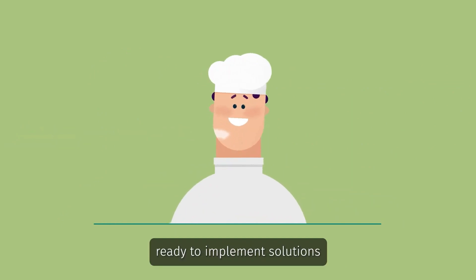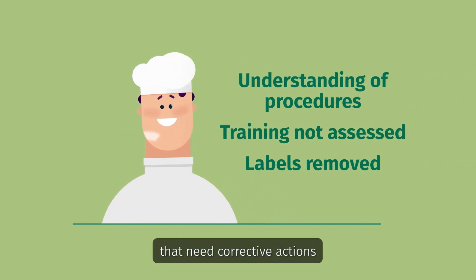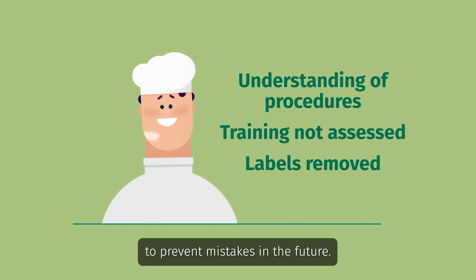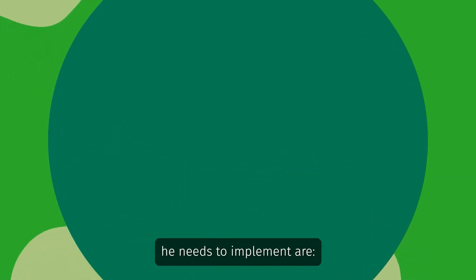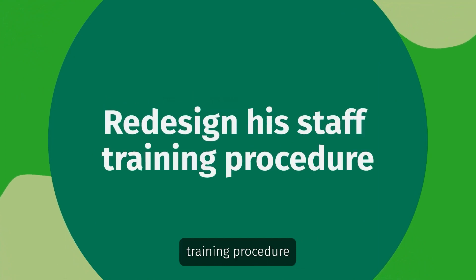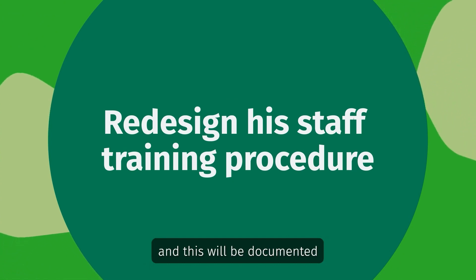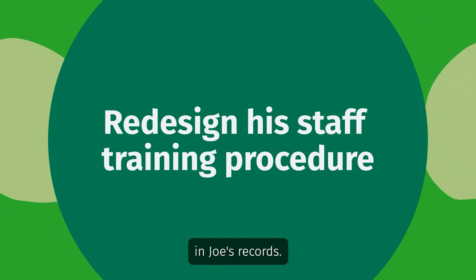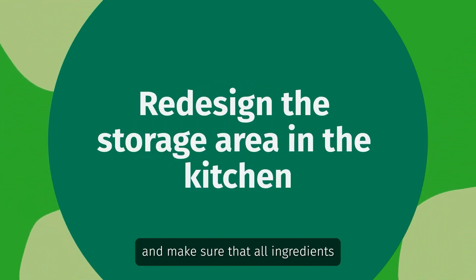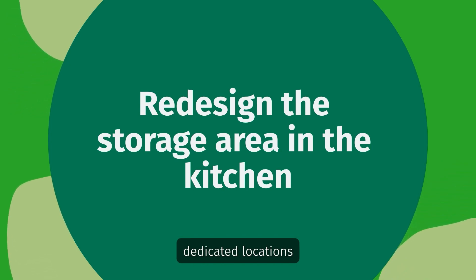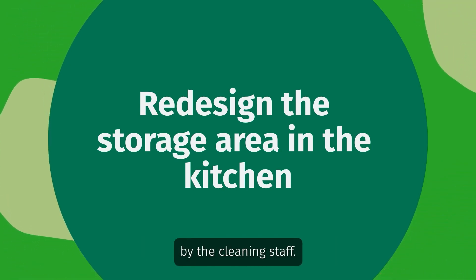Joe is ready to implement solutions to correct the problem. He's identified several different issues that need corrective actions to prevent mistakes in the future. The solutions Joe has decided to implement are to redesign his staff training procedure and include an assessment of the trainee's understanding, documented in Joe's records. He's also going to redesign the storage area in the kitchen, making sure that all ingredients are kept in separate, dedicated locations, and replace the labels with ones that can't be removed by the cleaning staff.